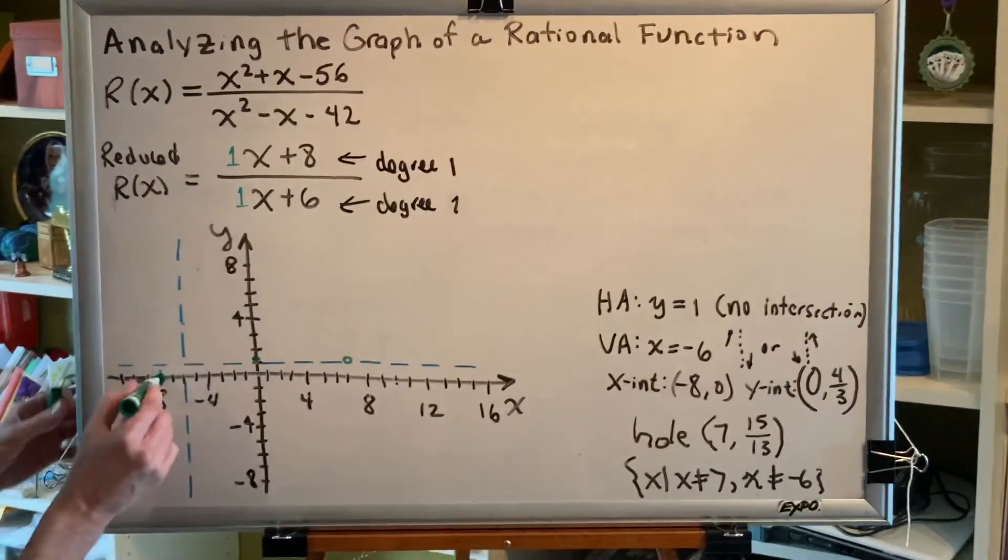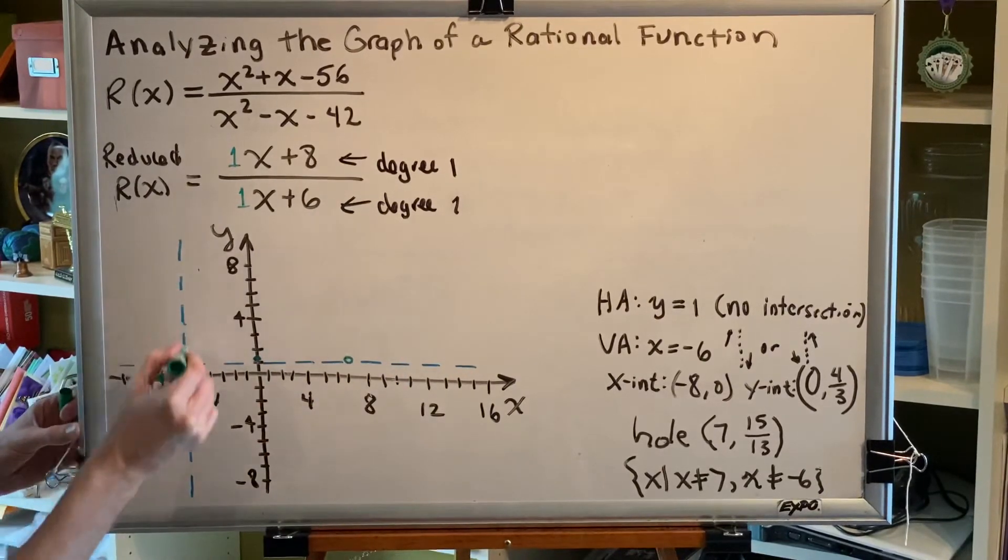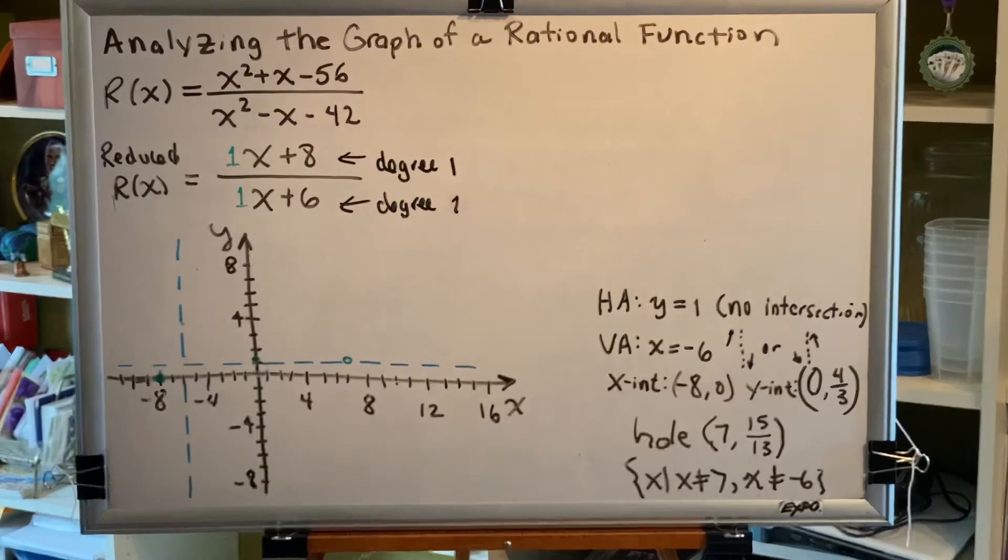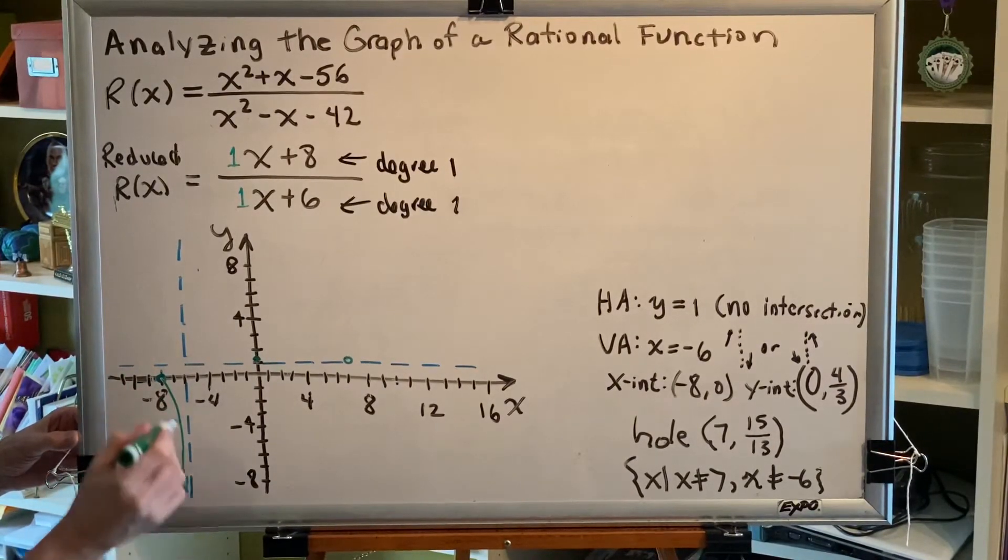For example, this point right here has to approach both this horizontal asymptote and this vertical asymptote, and since it cannot cross either one of those, we find that the shape of our graph must look like this.